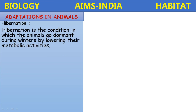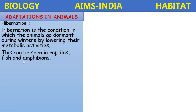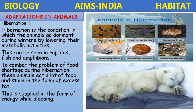Next adaptation: hibernation. To protect themselves during adverse conditions, animals undergo hibernation — a condition in which the animal goes dormant during winter by lowering its metabolic activities. This can be seen in reptiles, fish, and amphibians. To combat food shortage during hibernation, these animals eat a lot of food and store it as excess fat, which is then supplied as energy while sleeping. Examples include hibernating bats, turtles, frogs, bears, and chipmunks.